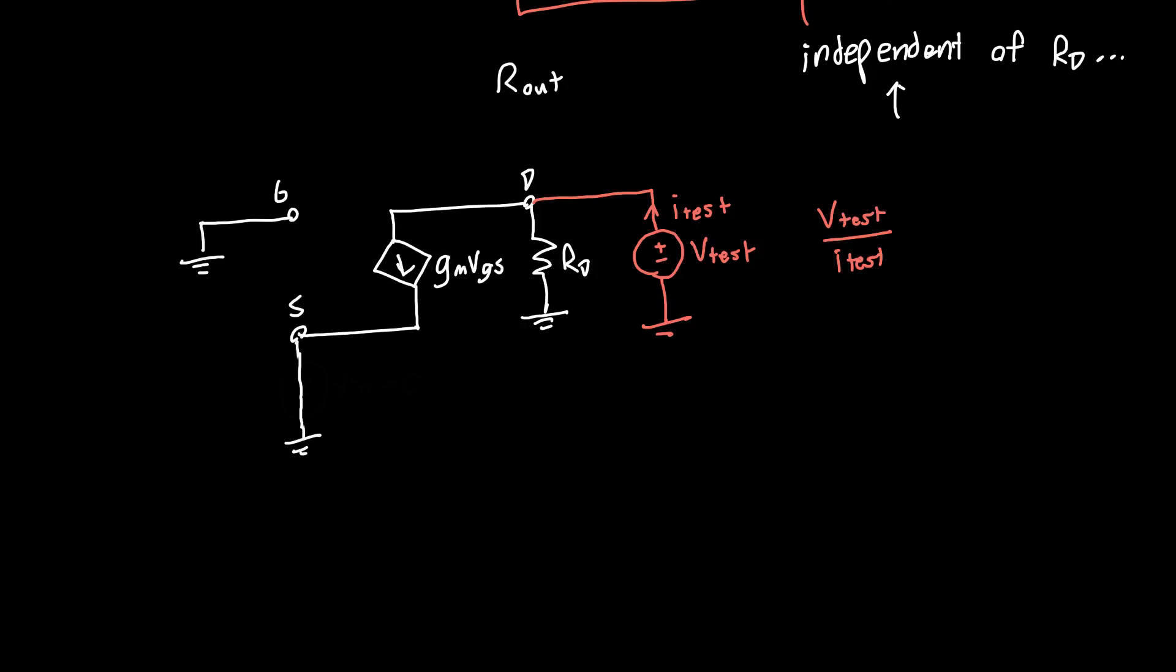How do we do that? The most intuitive way is we just apply KCL at this node. The current flowing in is equal to the current flowing out. The current flowing in is Itest. The current flowing out can take one of two paths, either this resistor or this current source. The current through the resistor is Vtest over RD. The current through the current source is just gm*VGS. All we need to do is figure out what this VGS value is. VGS is VG minus VS. Here VG is zero volts and VS is also connected to zero volts. So VGS is just equal to zero. This current source is off.